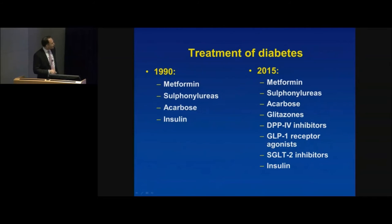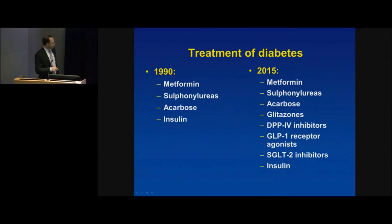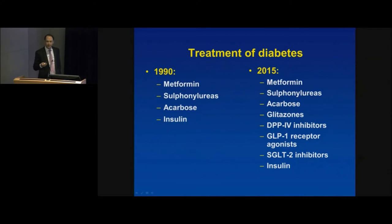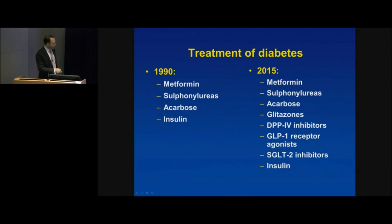How do we treat diabetes? Back in the 1990s it was simple — metformin first, then sulfonylureas like gliclazide, then acarbose (though rarely used due to increased flatulence risk), and finally insulin. About half of people with type 2 diabetes end up on insulin after 10 years. In 2015, it's much more complicated. There's metformin, sulfonylureas, acarbose, glitazones (though now used less due to cardiovascular concerns), and new drug classes I'll focus on — which, importantly, lead to weight loss rather than weight gain.